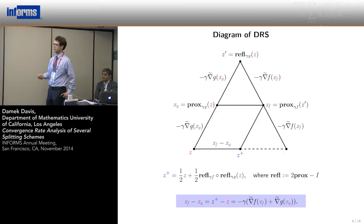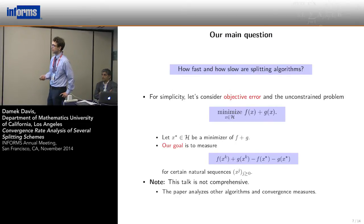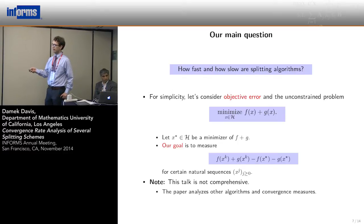How fast and how slow are splitting algorithms? We're only going to consider one measure of convergence today. There's other measures in the paper. We're going to talk about objective error. First we fix a minimizer x*, then we choose a sequence of points that hopefully converges to a minimizer. The objective error is this gap. What we want to know is how big and how small is this gap after k iterations.